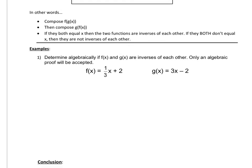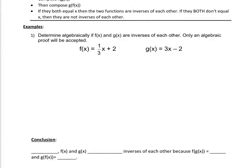So let's see if we could do example number one. It says: determine algebraically if f of x and g of x are inverses of each other — only an algebraic proof will be accepted. So the first thing we want to do is find f of g of x, and then the second thing we want to do is find g of f of x, and see if they both equal x.